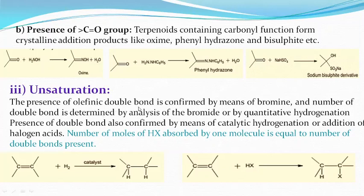Third, if unsaturation is present in terpenoids, the presence of an olefinic double bond is confirmed by addition of bromine, and the number of double bonds is determined by analysis of the bromide or by quantitative hydrogenation. The number of moles of hydrogen halide absorbed by one molecule is equal to the number of double bonds present in the terpenoid.